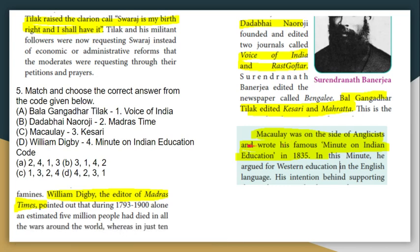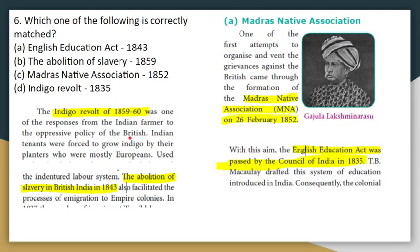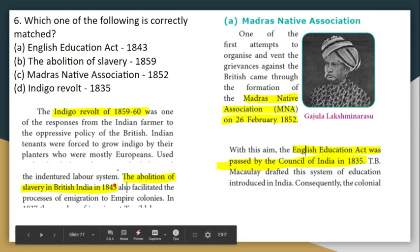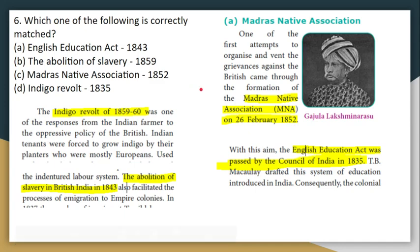Next is match the following. The English Education Act corresponds to 1835. The Abolition of Slavery in British India corresponds to 1843. The Madras Native Association corresponds to 1852. The Indigo Revolt corresponds to 1859–1860.